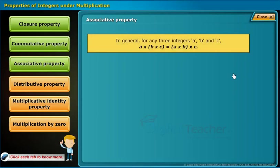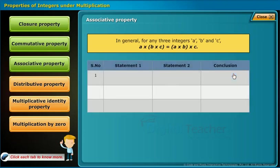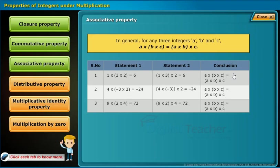Associative property defines that for any three integers a, b, and c: a into (b into c) equals (a into b) into c. For example: 1 into (3 into 2) equals 6 and (1 into 3) into 2 equals 6. The same holds for the second and third statements. Therefore, the table follows associative property under multiplication.